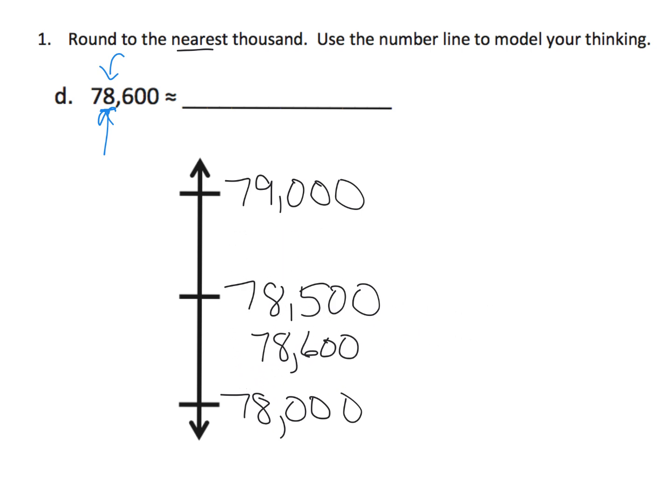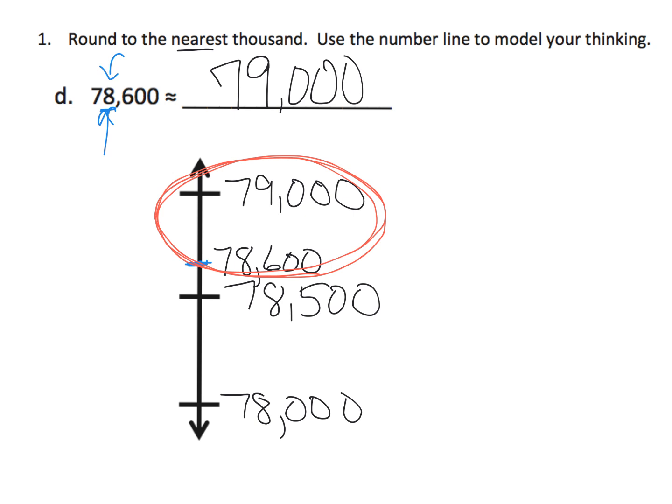And because 600 is larger than 500, we know it's going to live up here somewhere, not terribly close to 79,000, kind of more close to 78,500. We don't have to be perfect. We just have to be close enough to understand that it's above the midpoint rather than below the midpoint. And that automatically tells us that it rounds up to 79,000.